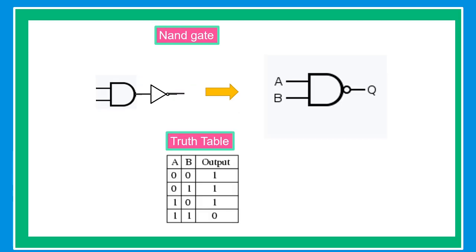NAND gate is an AND gate followed by a NOT gate. This is the basic construction of a NAND gate. The truth table of the NAND gate: when A and B are both 0, the output is 1.